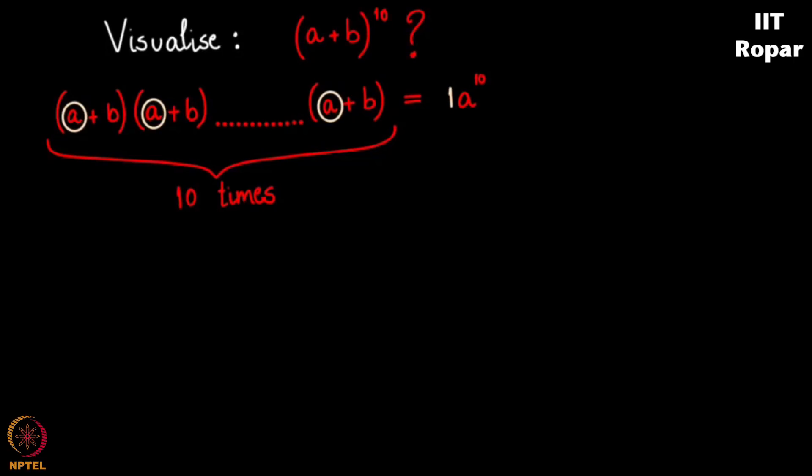And then if I ask you this question, in how many ways can you get a to the 9? The answer is no way. How can you get a to the 9? You are forced to pick either an a or a b from every cell, first cell, second cell up to 10th cell, correct? And how can you get a to the 9 from 10 cells? You will be forced to pick an a in the last cell or a b from the last cell. So what you can get is a to the 9 times b, correct? But in how many ways can you get this?